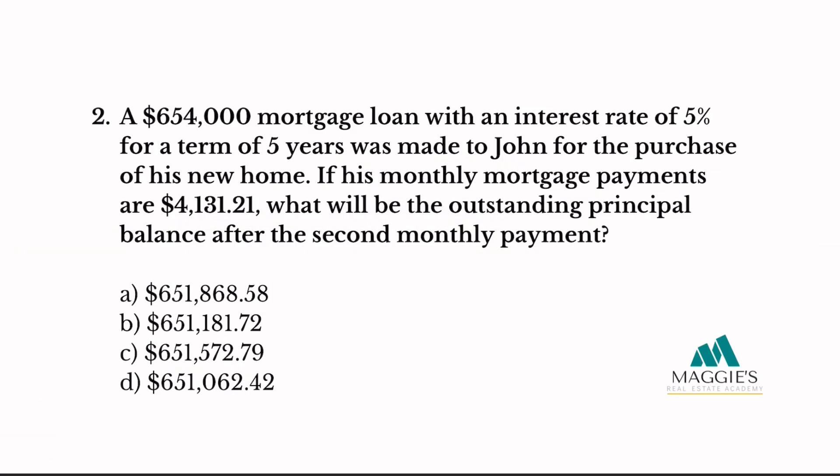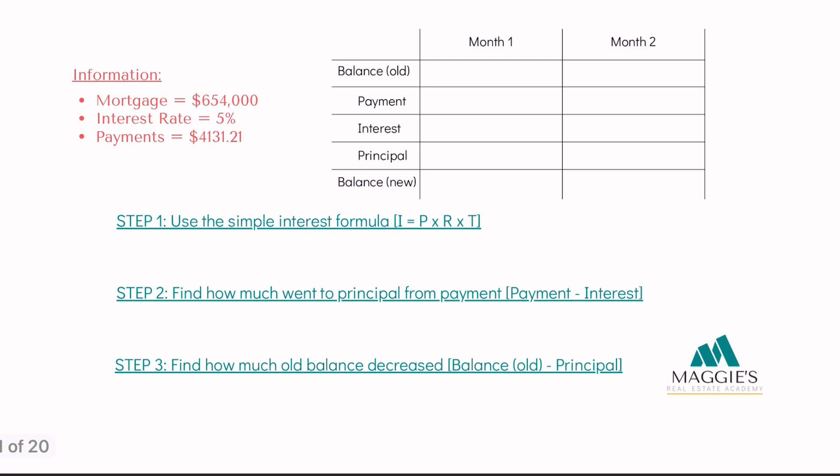Let's try another one. Problem two: A $654,000 mortgage loan with an interest rate of 5% for a term of five years was made to John for the purchase of his new home. If his monthly mortgage payments are $4,131.21, what will be the outstanding principal balance after the second monthly payment? The mortgage is $654,000, interest rate 5%, and payments of $4,131.21.